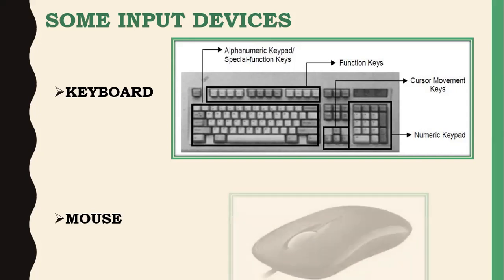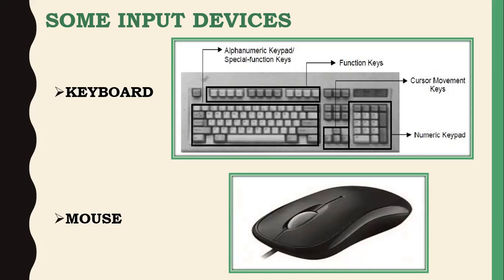The mouse is an input device used to give information in the form of pointing. Operations allowed with the mouse include click, double click, and drag and drop. The mouse has two buttons — left and right — and a scroll wheel in between for scrolling. Wireless mice are also available. The inventor of the mouse is Douglas Engelbart. The mouse is a pointing device; you point to an icon, highlight it, click or double click it to give instructions.